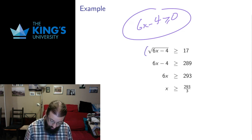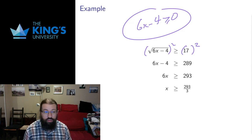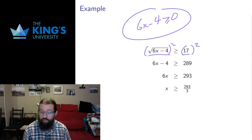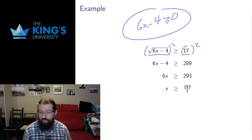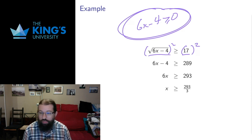Working under that initial assumption, I want to square both sides. My rule says I'm allowed to apply positive whole exponents like squaring, as long as both sides are positive. 17 is positive and by definition the square root is positive, so my condition is satisfied. On the left, the square root and the square cancel each other. 17 squared is 289.